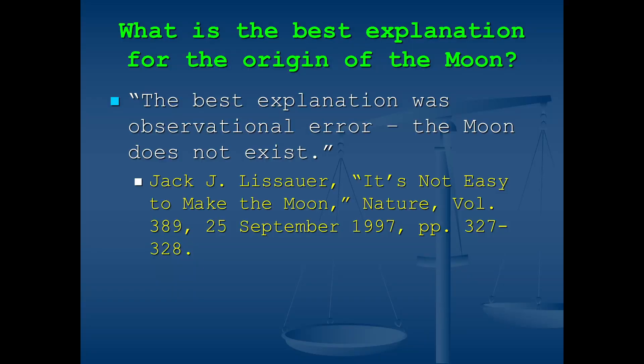In fact, because the many problems with the various explanations for the origin of the moon are so egregious, in one article in Nature the author apparently joked sarcastically that the best explanation was observational error — the moon does not exist. In other words, the experts have no clue how the moon was formed.